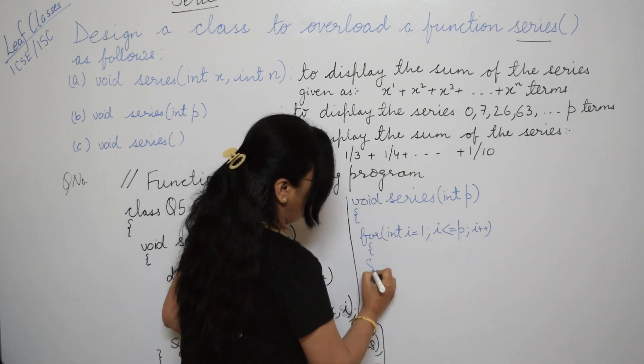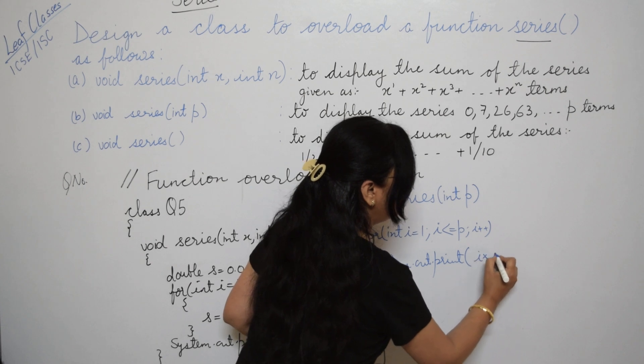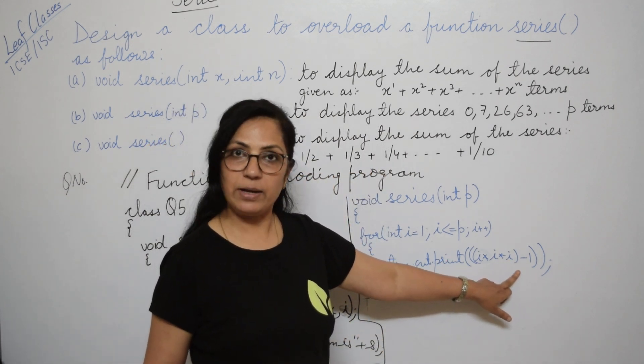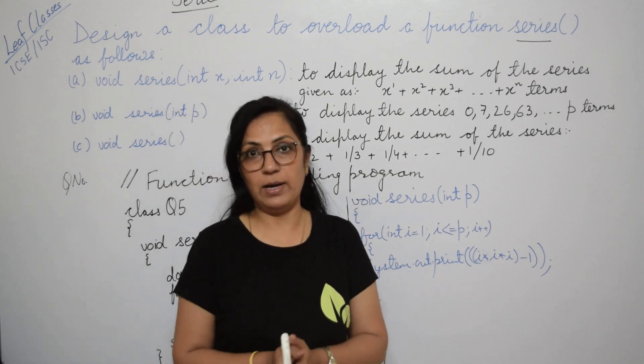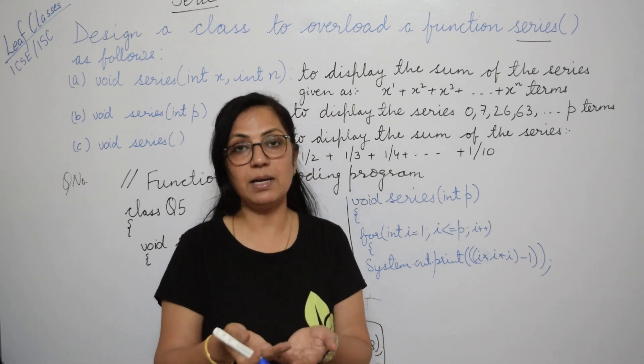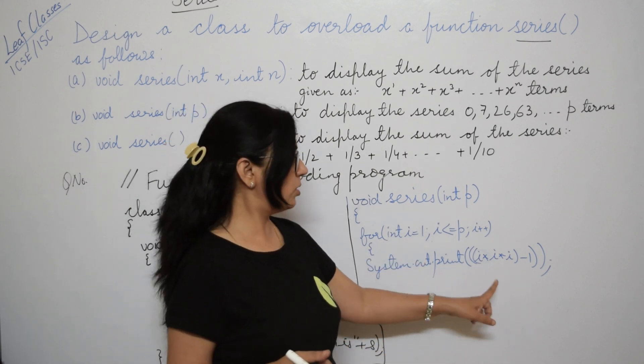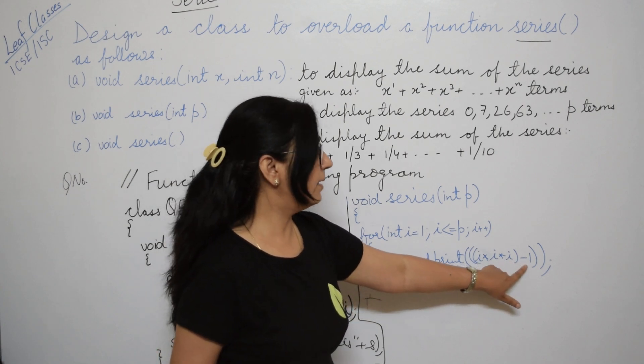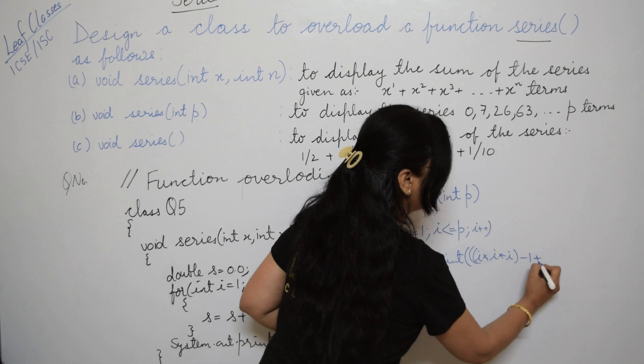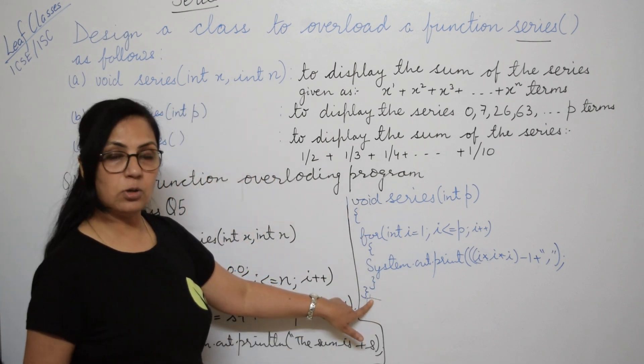Directly with print statement we can write the formula. To print, we use system.out.print i into i into i minus 1 - finding the cube and subtracting 1. If you want you can use Math.pow function, but Math.pow returns double type, so you have to do explicit conversion to int. If it's square or cube value, simply multiply it twice or thrice depending on the question. After this, if you want, print comma also by writing plus comma within the bracket. This series function is also over.